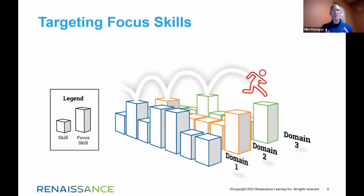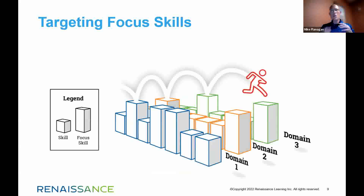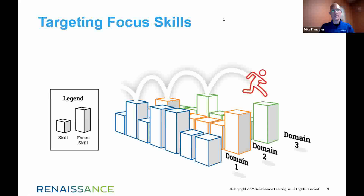We have to be more efficient in order to be more effective, especially after two years of a global pandemic. So we automatically include the ability to search by focus skills — the skills that are the most interconnected, or prerequisites to the prerequisites — and those skills come straight from the REN 360 assessment. When teachers identify what skills students are ready to learn next, they can go into Freckle and automatically assign those to students by searching by the TEKS.